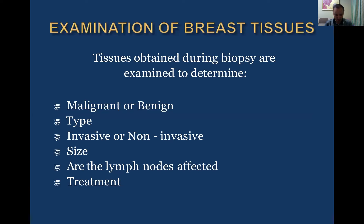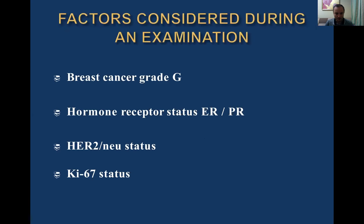Histological examination of breast tissue determines whether the tumor is malignant or benign, the morphological type, whether it is invasive or non-invasive, the size, and whether lymph nodes are affected. Based on this and other findings, we plan treatment. Breast cancer grade (G) is also determined by histological examination — it varies from zero to three. A lower grade number means a slower-growing cancer; a higher grade means a faster-growing cancer. Grade helps predict the outcome of disease and the effect of treatment.